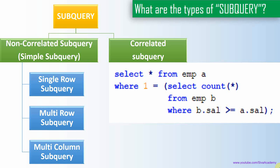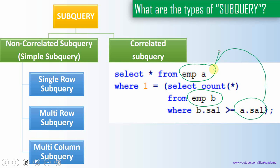As you can see here, in the outer query we have the employee table referenced by alias A, and in the inner query we are again referencing the employee table with alias B. The inner query refers to a column from the outer query's table — this is the main difference between a correlated subquery and a non-correlated subquery.